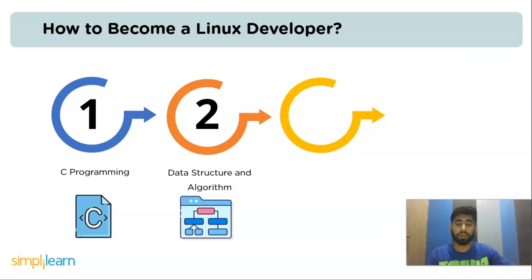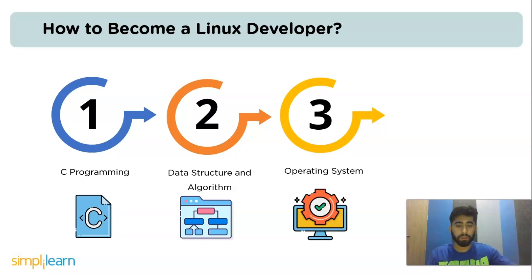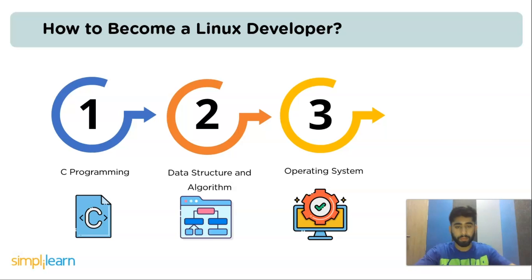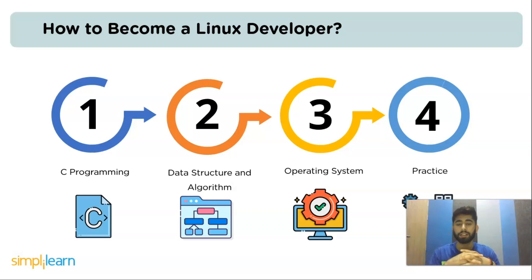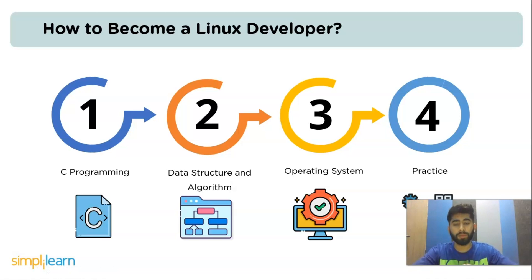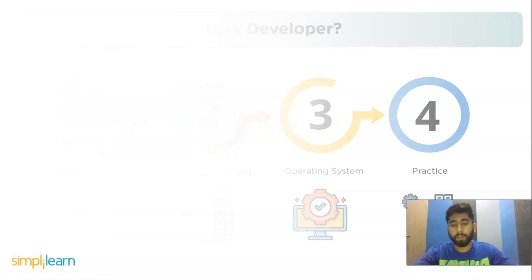The next step you should learn is the operating system. Now that you have acquired some knowledge of programming, the next thing on your to-do list should be to learn everything about the operating system. Additionally, do some competitive programming — it can help you master algorithms and data structures, and also shows you how to solve a problem in a short period of time.